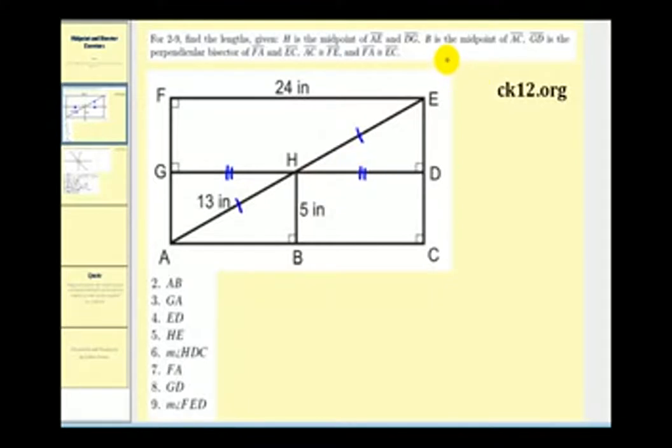Next we're also told that B is the midpoint of AC. Well here's segment AC, so if B is the midpoint then segment AB is the same length as segment BC.